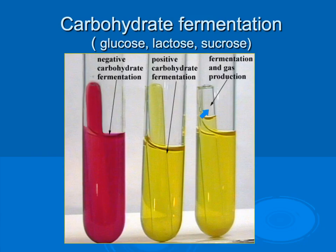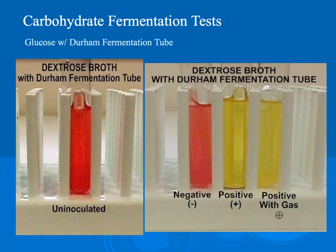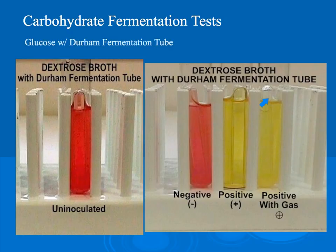If we have fermentation, we check for a gas bubble in the Durham tube — if present, then we have gas production. When reading the test: acid (yellow) is positive for metabolizing the sugar, indicated with a positive symbol. A negative means no color change. Acid with gas production is yellow plus a gas bubble present in the Durham tube, indicated with a positive and a circle — that circle indicates gas was produced.